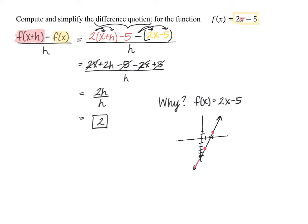if we connect any two points on this line, the secant line would actually be the exact same as the line we were given. So if the difference quotient represents the slope of the secant line, and in this case the secant line is the same as the original function, the slope of that line is 2. Our answer of positive 2 makes sense for this function, since the original function was a line.